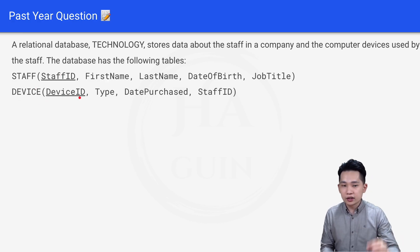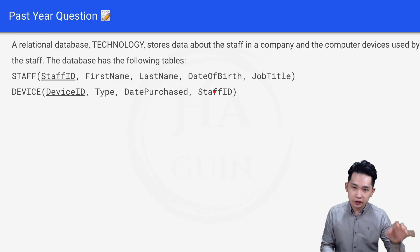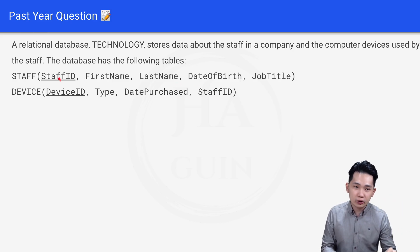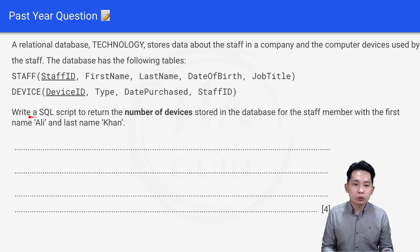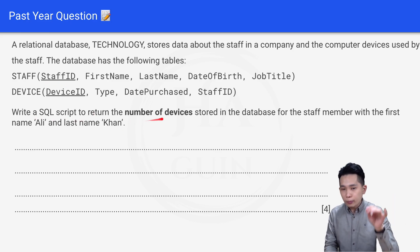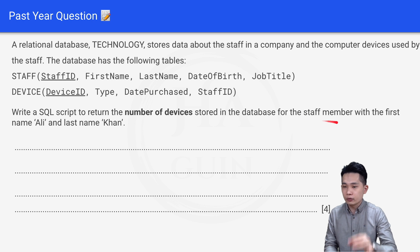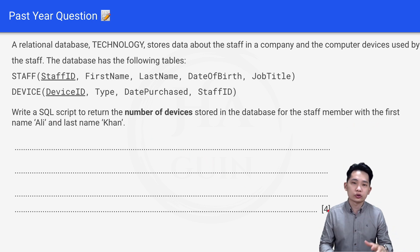The device table has: deviceID, type, datePurchase, and staffID — where staffID is a foreign key linked to the primary key staffID in the staff table. The question asks you to write a SQL script to return the number of devices stored in the database for the staff member with first name Ali and last name Khan. This is a four-mark question.